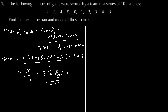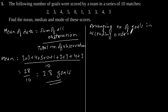And to find median and mode, let us arrange the number of goals in ascending order. Arranging number of goals in ascending order, we will get 0,